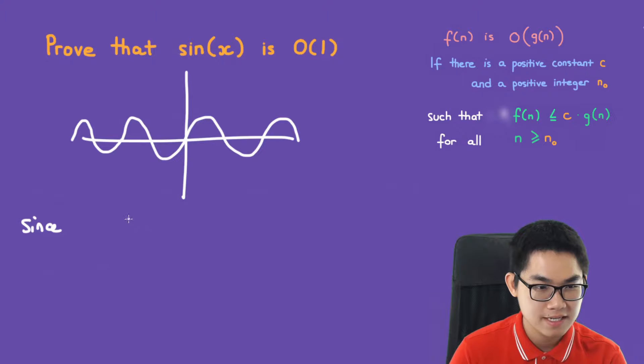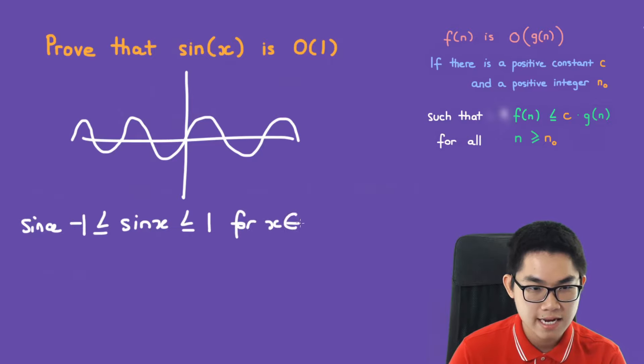So since sine of x is always less than or equal to 1 and greater than or equal to negative 1, for x in the interval from negative infinity to positive infinity,